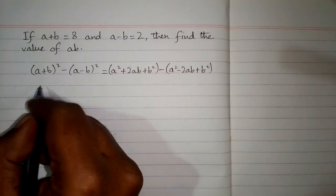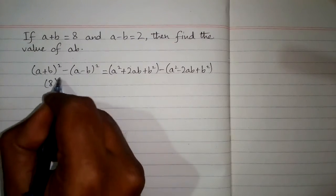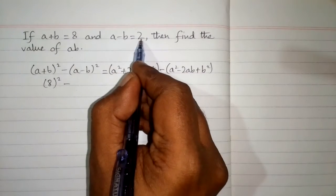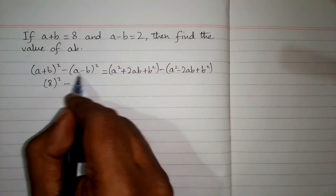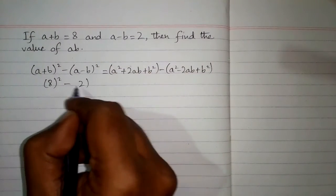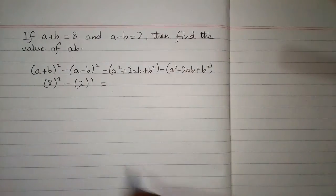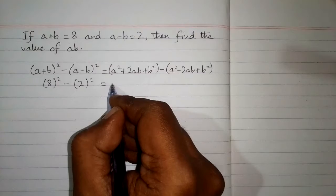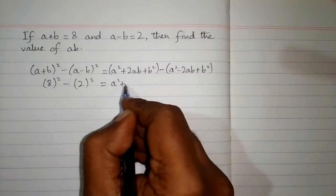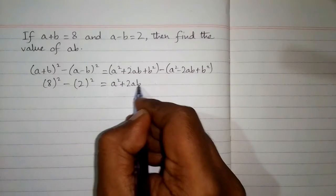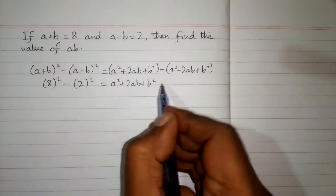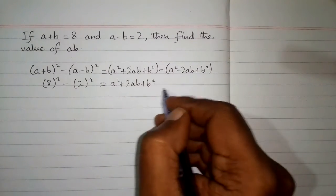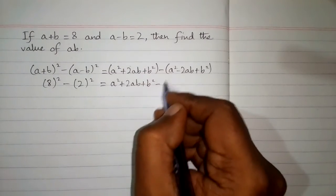We write 8 squared, then minus sign, and the value of a minus b is 2, so we put 2 in place of a minus b, giving us 2 squared. Now we remove these brackets — the first part remains the same: a squared plus 2ab plus b squared.